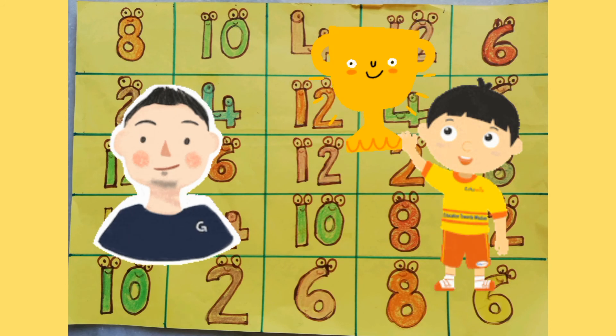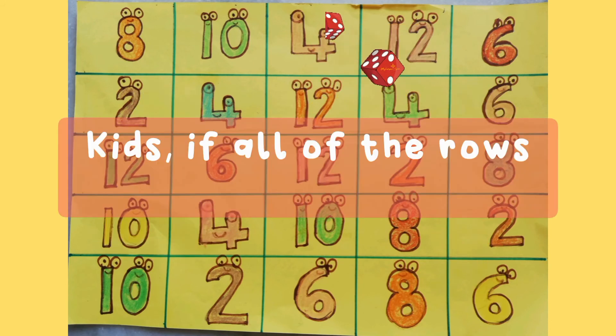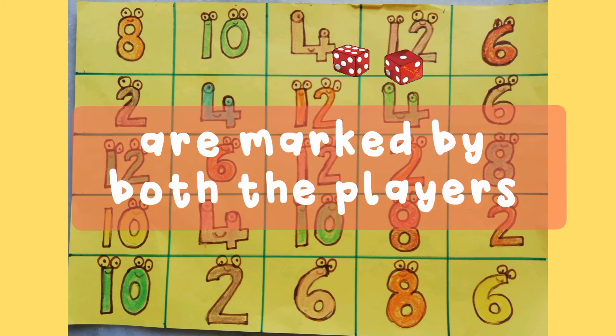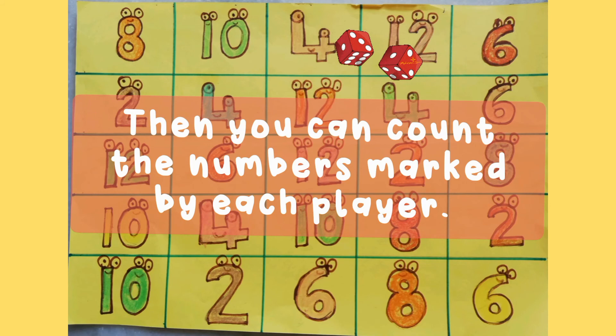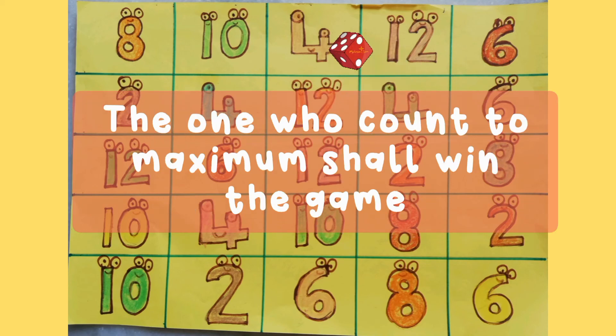Well done, kid. Congratulations. Kids, if all of the rows are marked by both players, then you can count the numbers marked by each player. The one who counts to the maximum shall win the game.